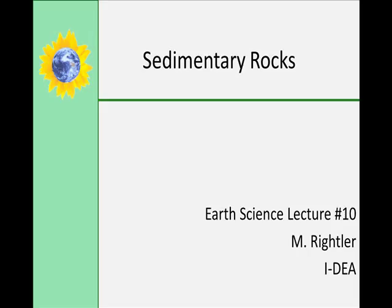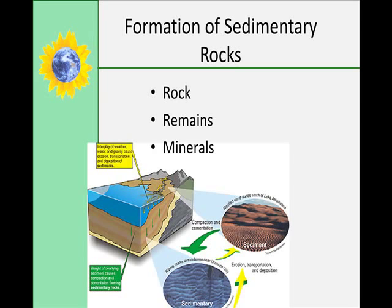Welcome back ladies and gentlemen. Today we're going to talk about sedimentary rocks. We've talked about how rocks form and the rock cycle, but now we're going to look at specific rock types in this lecture and the next two. Sedimentary rocks can form from particles of rock, from the remains of plants and animals, or from newly formed mineral crystals that are transported by agents of erosion and then deposited in new locations on land or underwater.